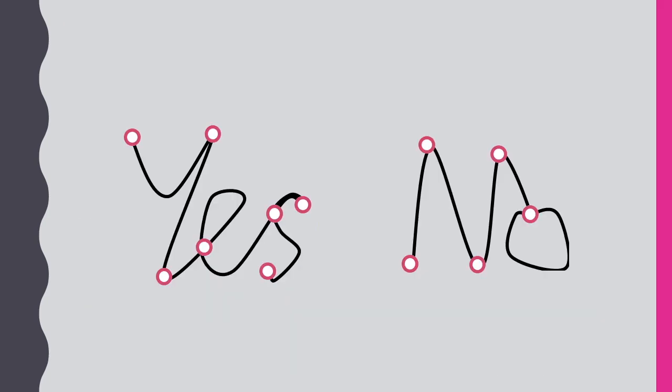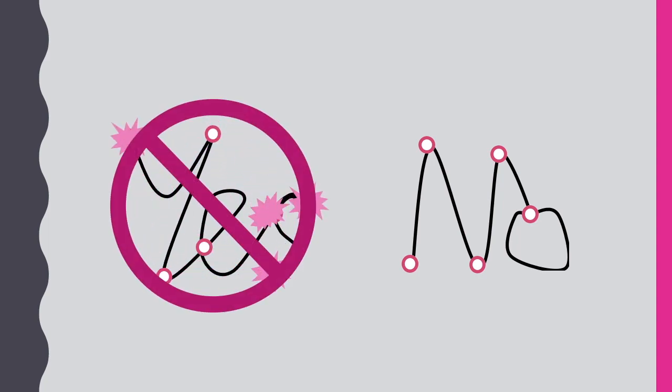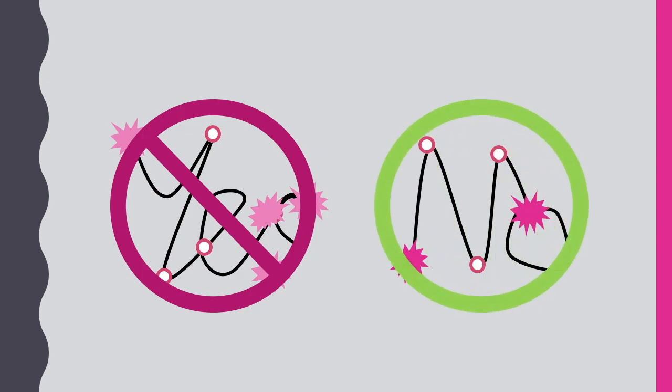How about these two graphs? Will there be an Euler path in either of them? In the first graph, there are four odd vertices, so again we won't have an Euler path. And on the right, we only have two, so in this case we'll be able to find an Euler path starting from one and ending at the other.